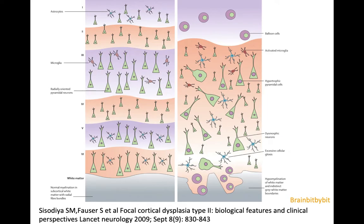In focal cortical dysplasia type 2, there is no normal six-layered cortex. You can recognize a little bit of layer 1, and then everything is mixed up. The neurons are dysmorphic, with abnormal glutamate receptors and abnormal glutamate transporters, which might explain why it is often refractory to anti-epileptic drugs. The difference between type 2a and type 2b is the presence of balloon cells — large cells with a lot of cytoplasm — which partly explain the high T2 signal.